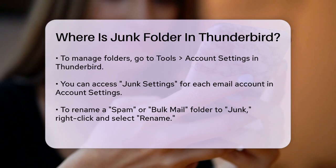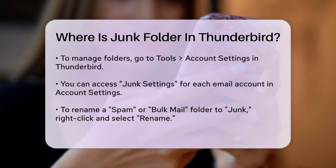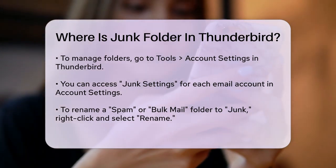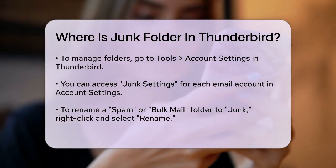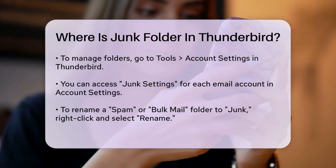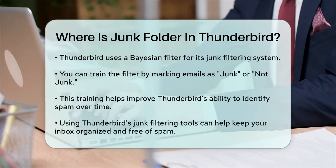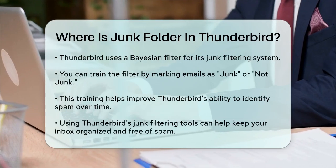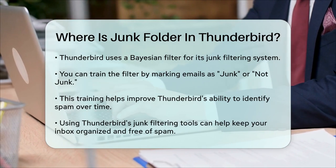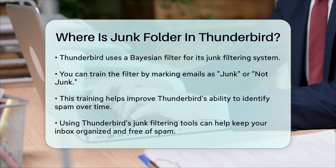Thunderbird's junk filtering system is quite robust and uses a Bayesian filter, which learns from your interactions. You can train it by marking emails as junk or not junk using the junk toolbar button. This helps Thunderbird get better at identifying spam over time.